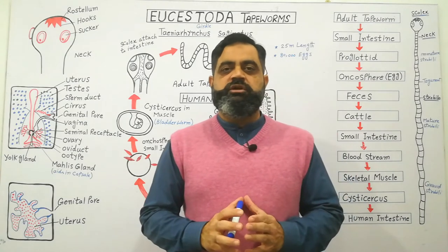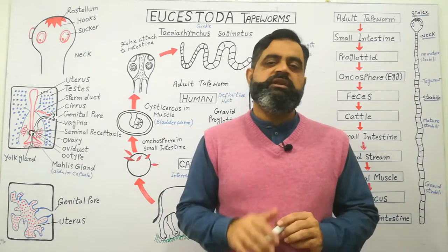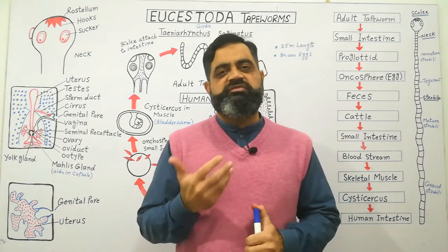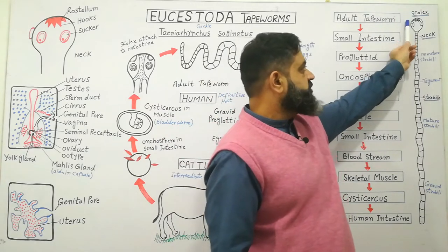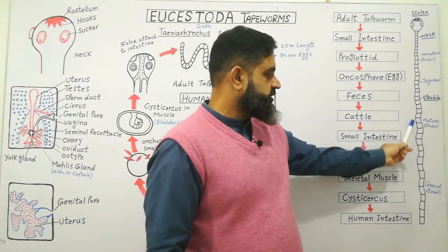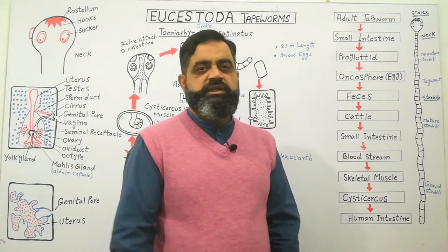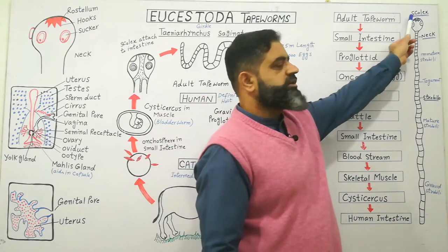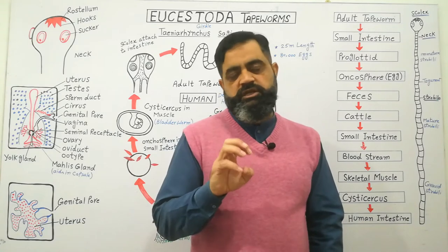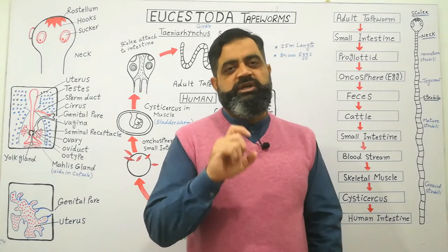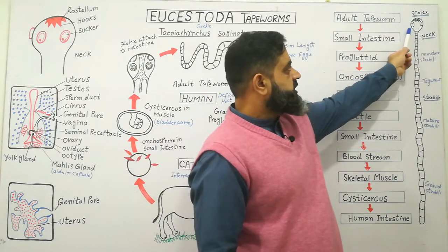We are going to look at the external body structure of tapeworms. Tapeworms are huge animals which are very long in length, usually up to 25 meters. This tapeworm has three body regions. At the anterior end of the body there is a head-like structure which is known as the scolex. This region of the body contains suckers and hooks which help the animal to attach to the surface of the small intestine.